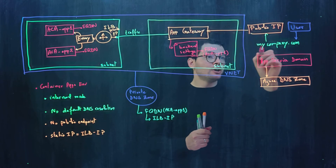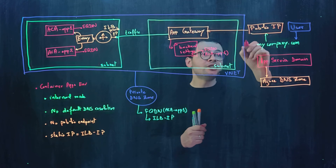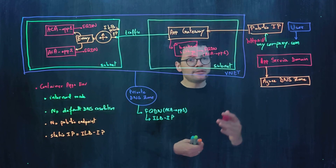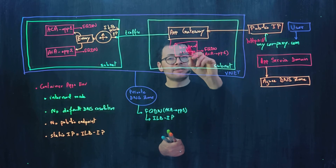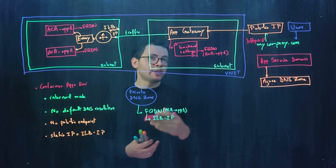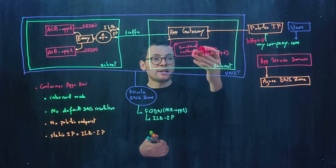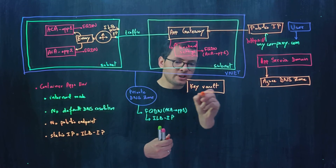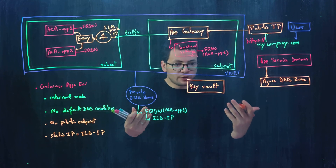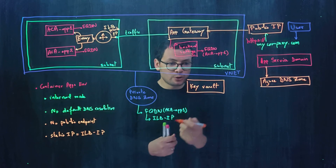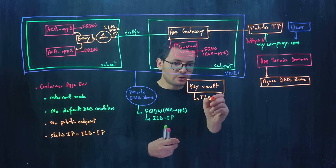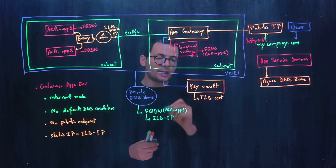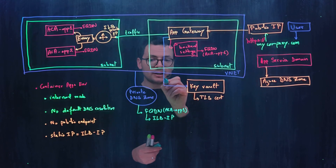To enable HTTPS for encrypted and more secure traffic, a TLS certificate is needed for the custom domain name, configured within the Application Gateway. You can upload a TLS certificate directly, or rely on Azure Key Vault to generate a self-signed certificate or import your own. The TLS certificate is stored securely in Key Vault, and the Application Gateway connects to it using a managed identity to retrieve the certificate.